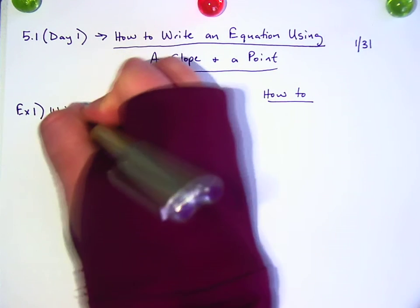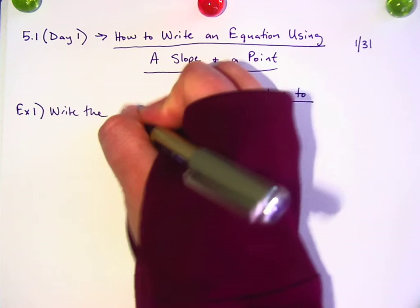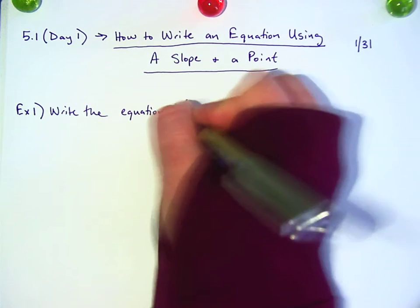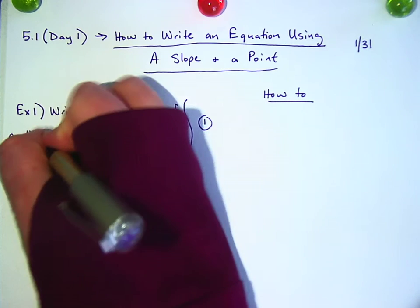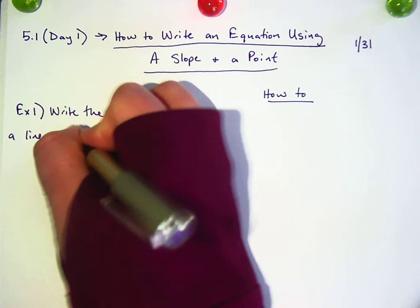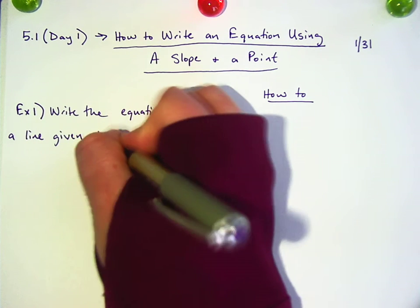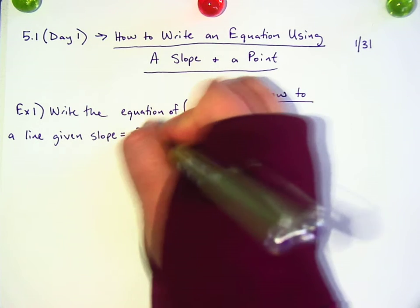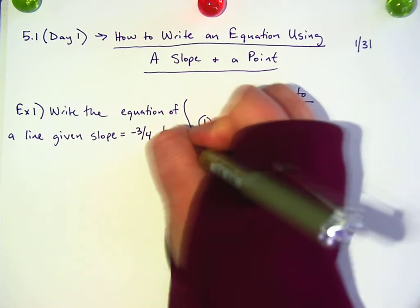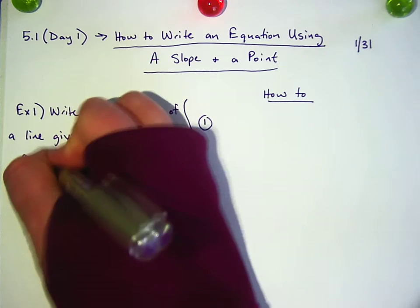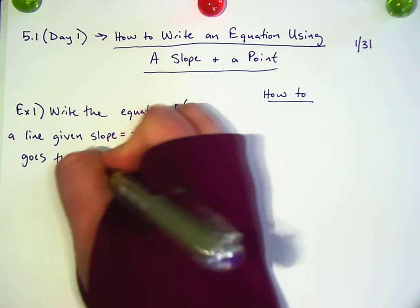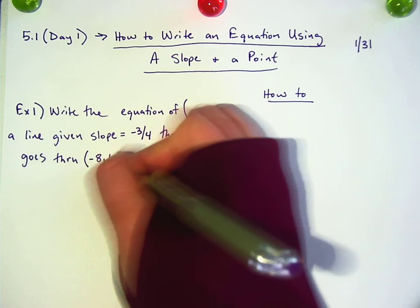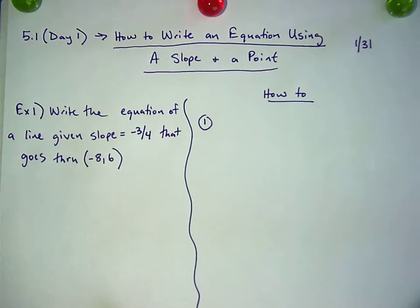I want you to write the equation of a line given a slope of negative three-fourths that goes through—I see a lot of you guys not writing right now. You've got to write down these. Negative eight, six. It doesn't help to have notes that doesn't have the original question in it.